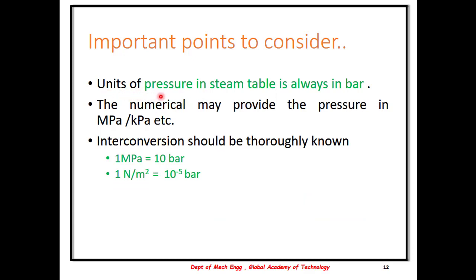Further, the units of pressure in the steam table are always in bar. Sometimes numericals provide pressure in other units such as megapascal, kilopascal, or Newton per meter squared. The interconversion should be thoroughly known: one megapascal is 10 bar, one Newton per meter squared is 10 to the power minus 5 bar. So if the units are given in megapascal, you need to convert to bar before looking up the steam tables.